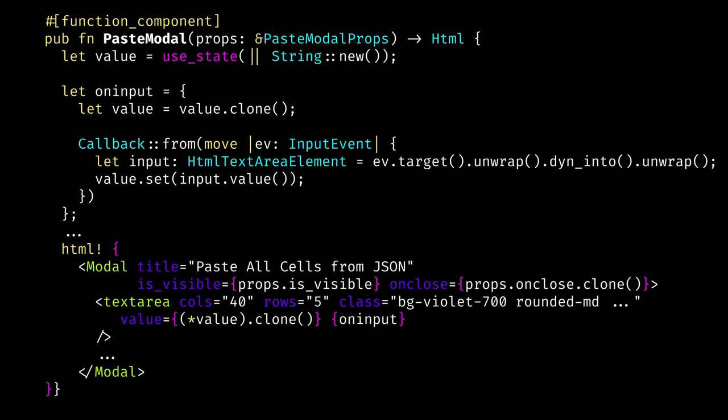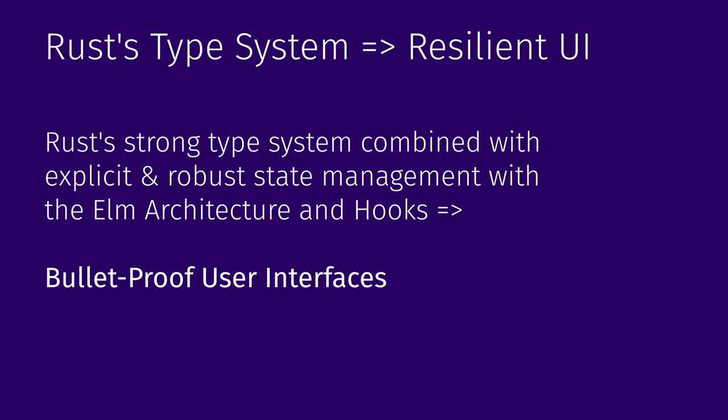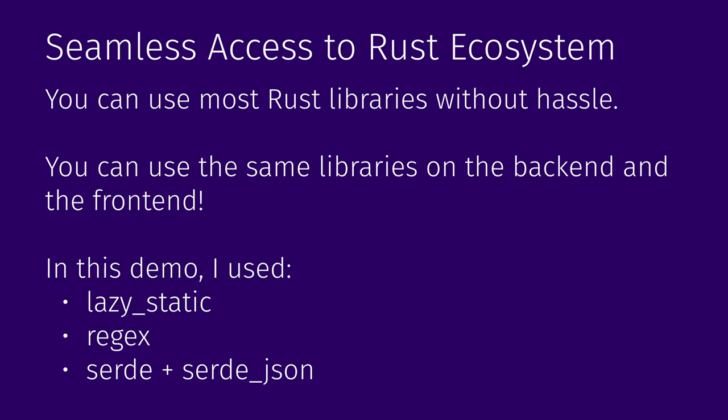I also set Tailwind classes there — I wrote a blog post about how to integrate Tailwind with Yew and will add the link in the description. Another obvious plus of using Yew is the power of Rust's type system. This strong type system combined with the Elm architecture or hooks, which rely on carefully managed state, allows you to build very resilient UIs. You also have explicit error handling — many APIs that silently throw in JavaScript return Result in Rust, so you know you need to handle the error case. And you have seamless access to the Rust ecosystem, using libraries like lazy_static, regex, serde and serde_json on the frontend — the same libraries you'd use on the backend.